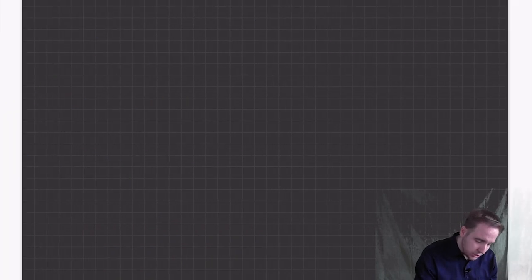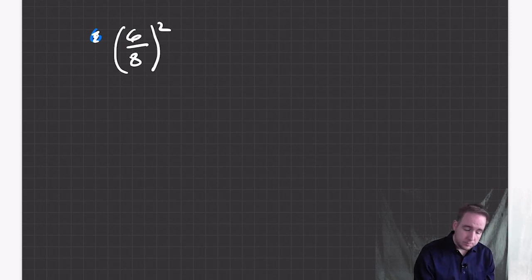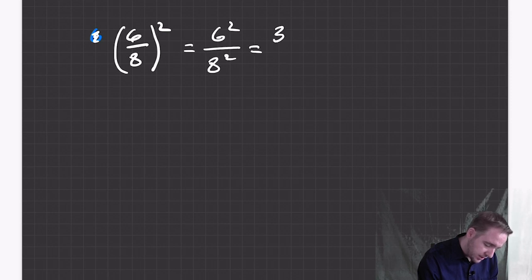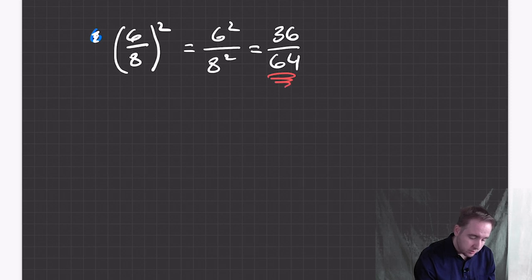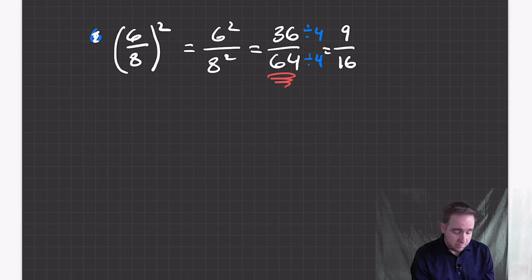One last thing that just speeds things up: if you have a fraction that reduces — say six eighths squared — that should be six squared over eight squared, which is 36 over 64. This is not in lowest terms. Both numbers divide by four, so dividing gives you nine over 16, and this doesn't reduce any further.